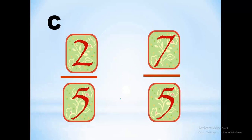Here we also have 2 over 5 and 7 over 5. All these questions have the same idea: when you have the same denominator, you directly look up to the numerator and see which one is the highest number — that fraction will be the biggest. So for 2 over 5 and 7 over 5, the number 7 is the highest.